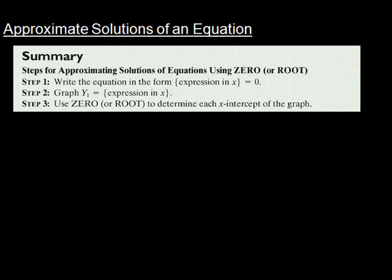Approximate solutions of an equation — this is basically what we're going to do on the calculator. First, we're going to write the equation equal to zero, go into y equals and put that equation in there. Then we're going to use the zero function to determine each x-intercept. We did this in the last lecture, but we're going to use larger equations this time.